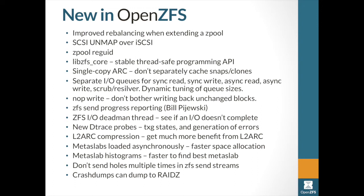The queue depth was shrunk down in different implementations — ZFS handled that a bit differently — but most people found that more than about five requests in the queue didn't give much extra performance. Keeping it at five meant synchronous requests could go through much faster even if queued behind other operations.